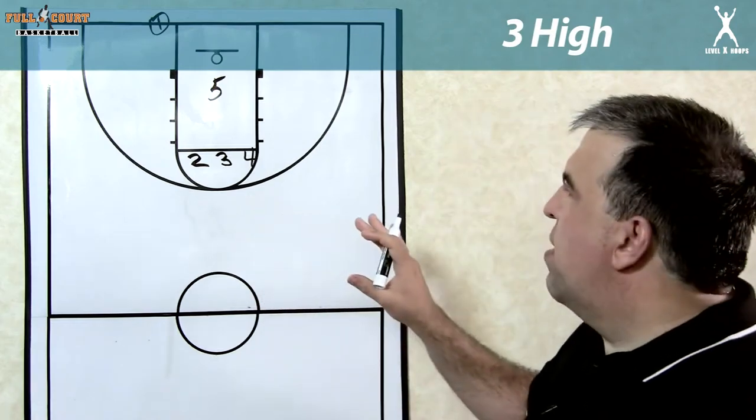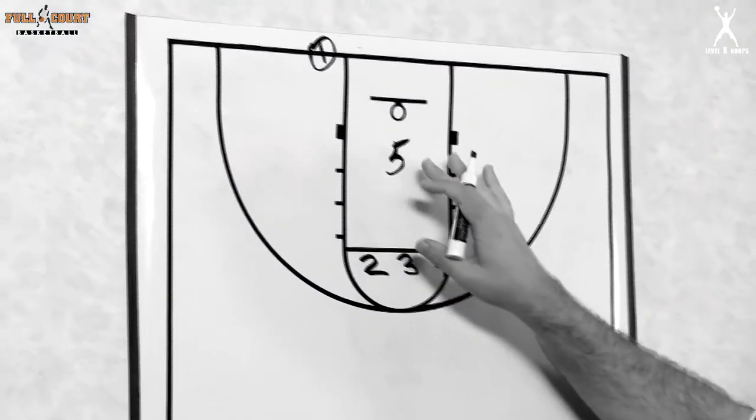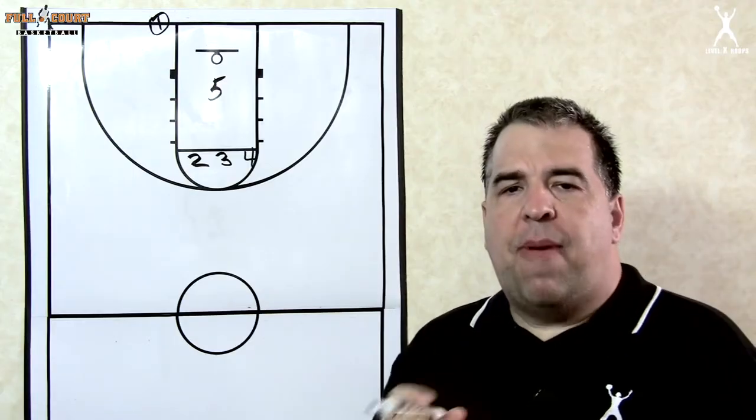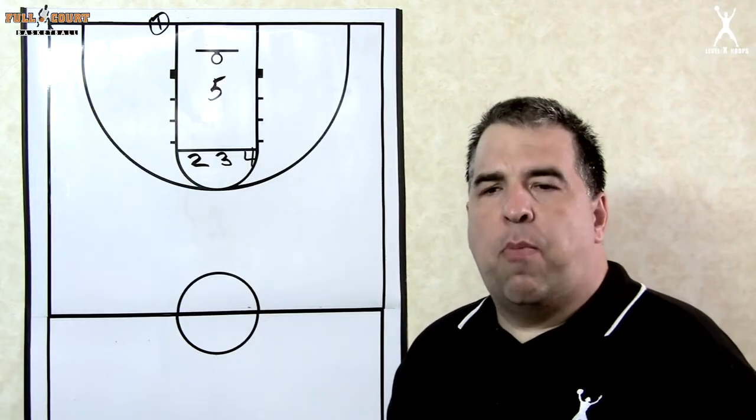With this out-of-bounds play, the first thing we're looking to do is get the ball inside to the five posting up in front of the rim. If not, we'll have some action to get the ball inside and then set up a ball screen action.